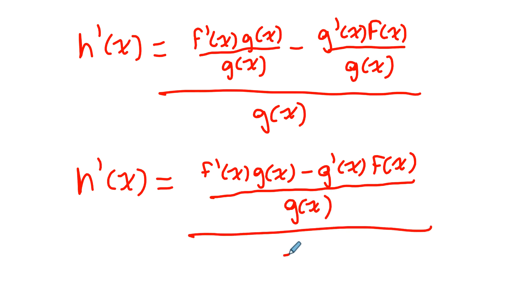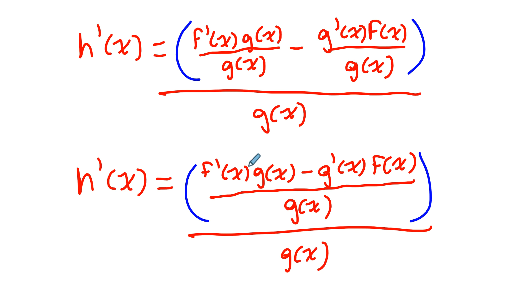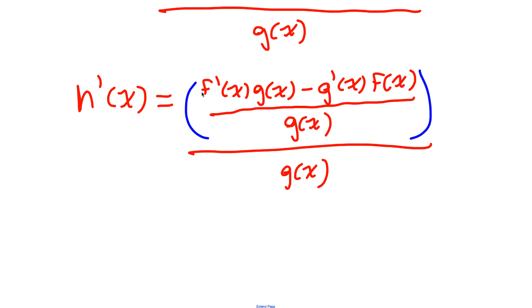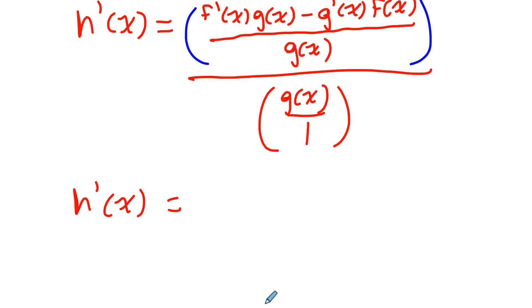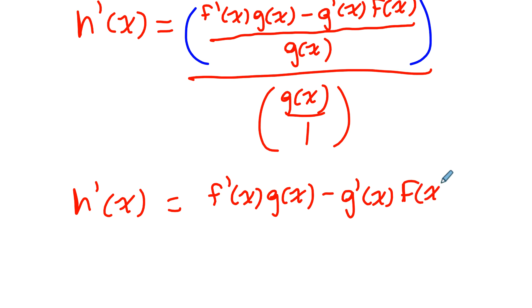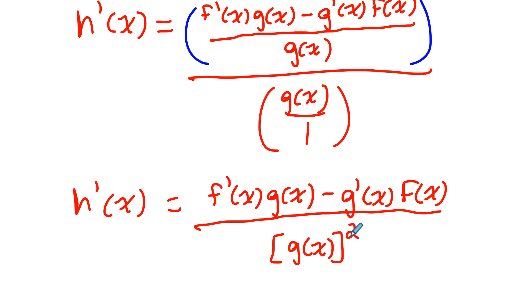And then that's all over g(x) again. This f'(x)·g(x) minus g'(x)·f(x) is being divided by g(x), and then all of that is being divided by g(x) again, so that can be simplified. If you imagine dividing by fractions — this is actually over 1, flip and multiply — what we end up getting is h'(x) equals the numerator over g(x) times g(x), which is g(x) squared.